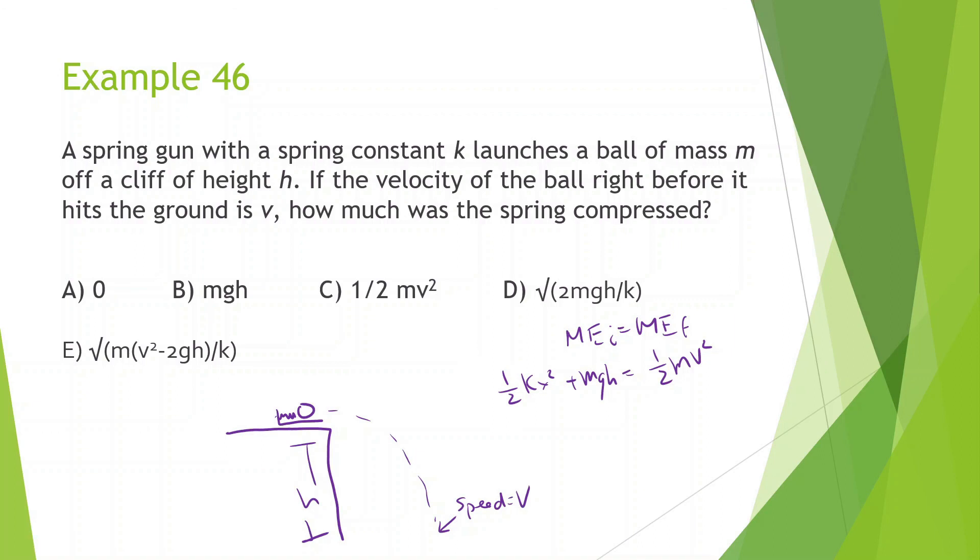So we're looking for how much the spring was compressed. I'm going to bring KX squared is equal to one-half MV squared. And I'm going to bring this to the other side, minus MGH. And then I'm going to divide both sides by one-half K. So then I have X squared is equal to two, so that cancels out, MV squared, minus two MGH. And then I can get rid of this squared and put a square root here. And then this is our answer here. MV squared, oops, I forgot the K. Divide by K. Put the K onto the other side. And then we see that our answer is E.